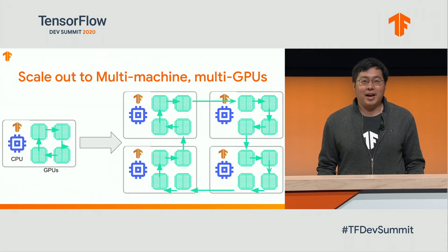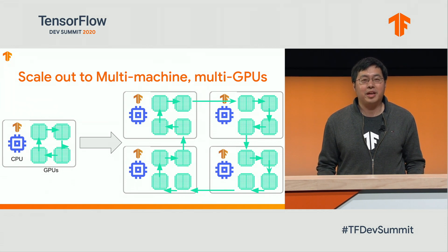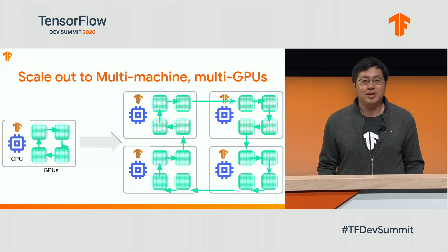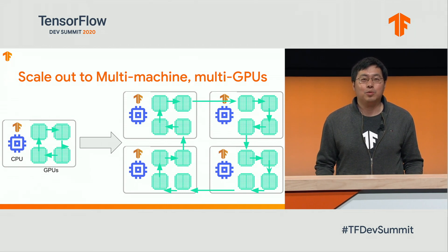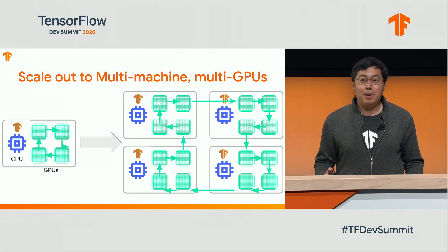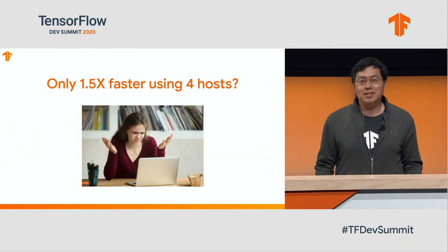Let me start by sharing a piece of experience you might have already encountered. Suppose you have an awesome prototype machine learning model that you worked so hard to make run efficiently on a single host with multiple GPUs. Now it's time to really get it running end-to-end with more resources. You start four beefy cloud virtual machines, each with multiple modern GPUs connected with a fancy 100 gigabits network. You deploy your model and hope to see it run blazingly fast. But why are you only getting 1.5x faster than a single machine while using four of them?